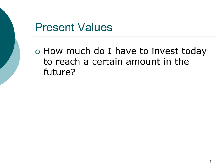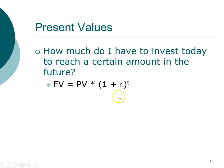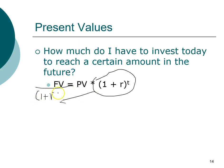Another way to think of the present value problem — and the most common use — is a retirement or life planning problem. Let's say you want to buy a house or a car: how much do you have to invest today in order to reach that amount in the future? The present value formula is derived from the future value formula. We rearrange it by dividing both sides, so the present value equals the future value divided by the interest factor.